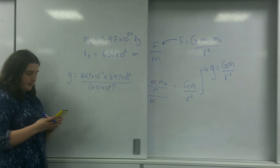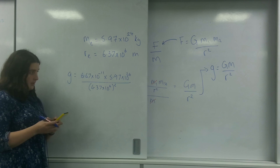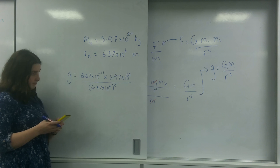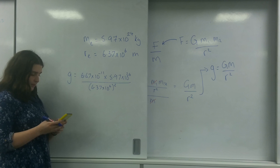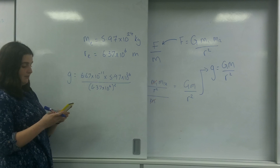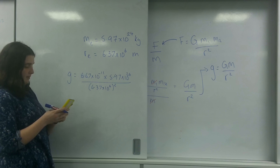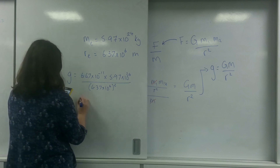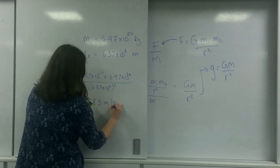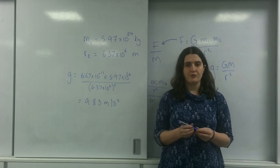So g equals 6.67 times 10 to the minus 11, times by 5.97 times 10 to the 24, all over 6.37 times 10 to the 6, squared. That gives an answer of 9.83 metres per second squared, which is what we're expecting — we expect and use 9.81 for the gravitational field strength on Earth.